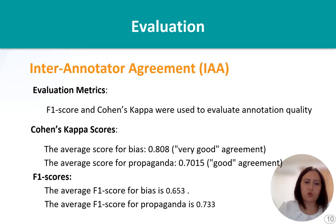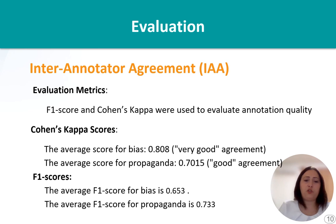In order to ensure quality of our annotations, we used inter-annotator agreement with two evaluation metrics: the F1 score and Cohen's kappa. The Cohen's kappa average score for bias was 80%, and for propaganda was 70%. The F1 score for bias is 65%, and for propaganda is 73%.